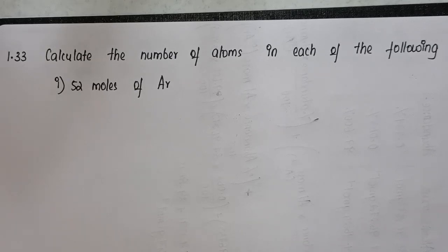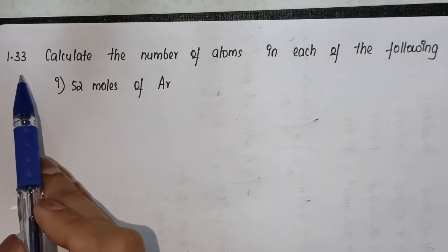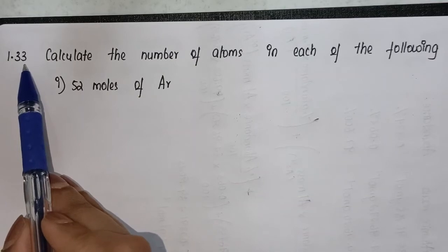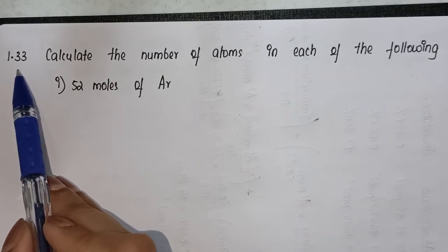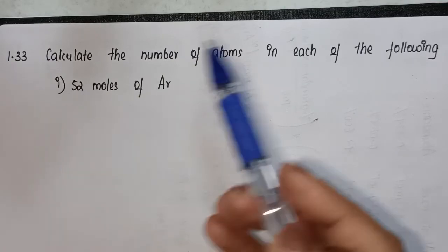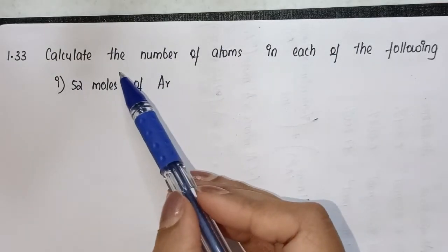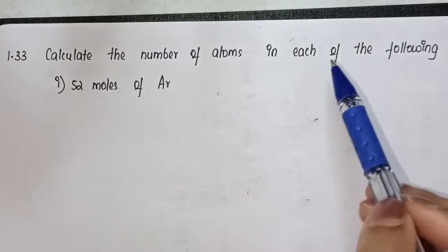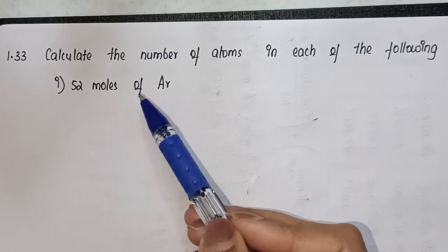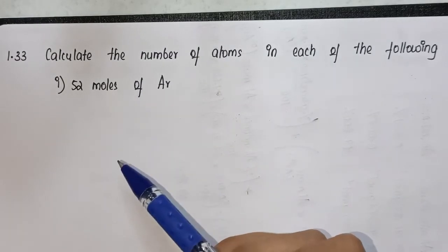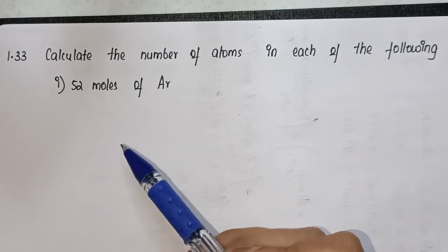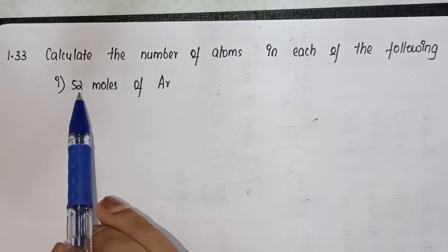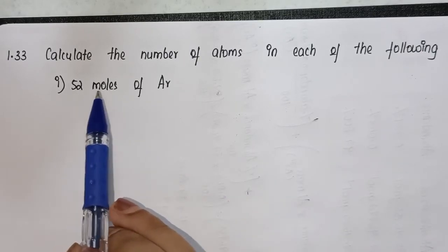Hello students, in this video we are going to cover question number 1.33 from NCERT Chapter 1. The question says: calculate the number of atoms in each of the following. We have a set of questions given to us, so let's solve them one by one. The first question is 52 moles of argon.